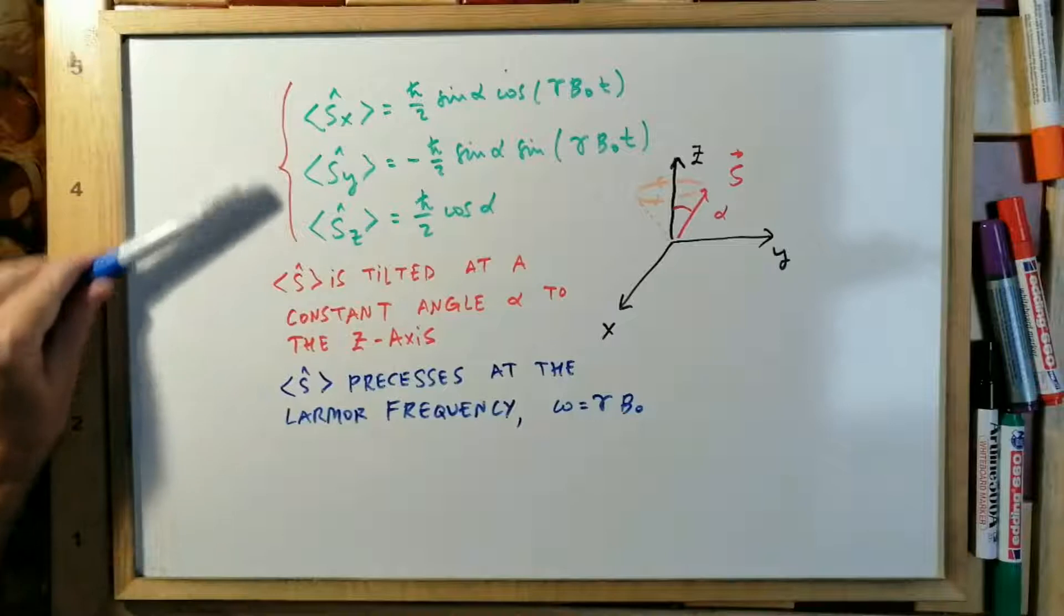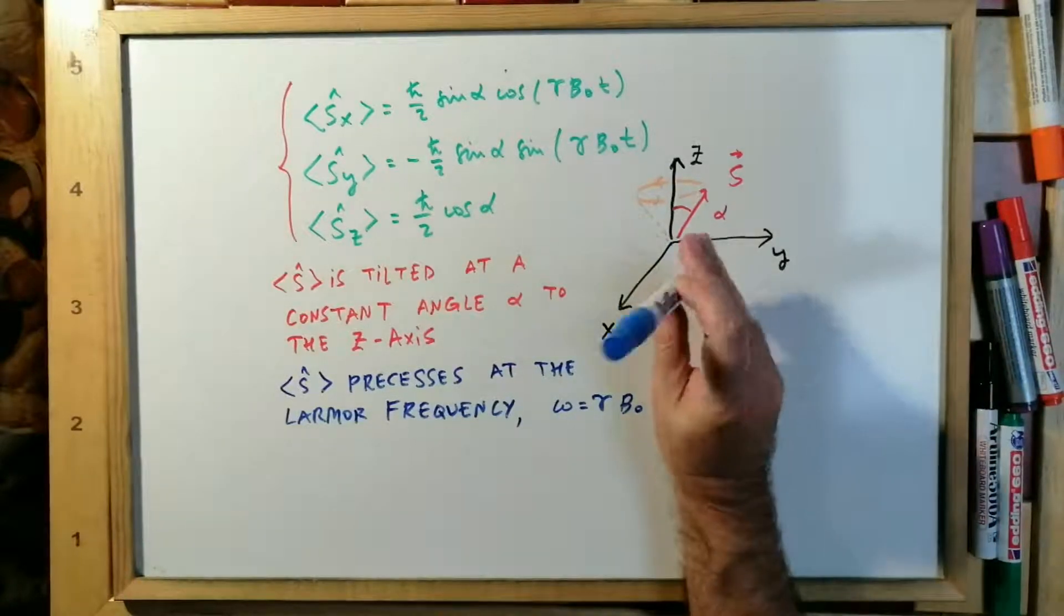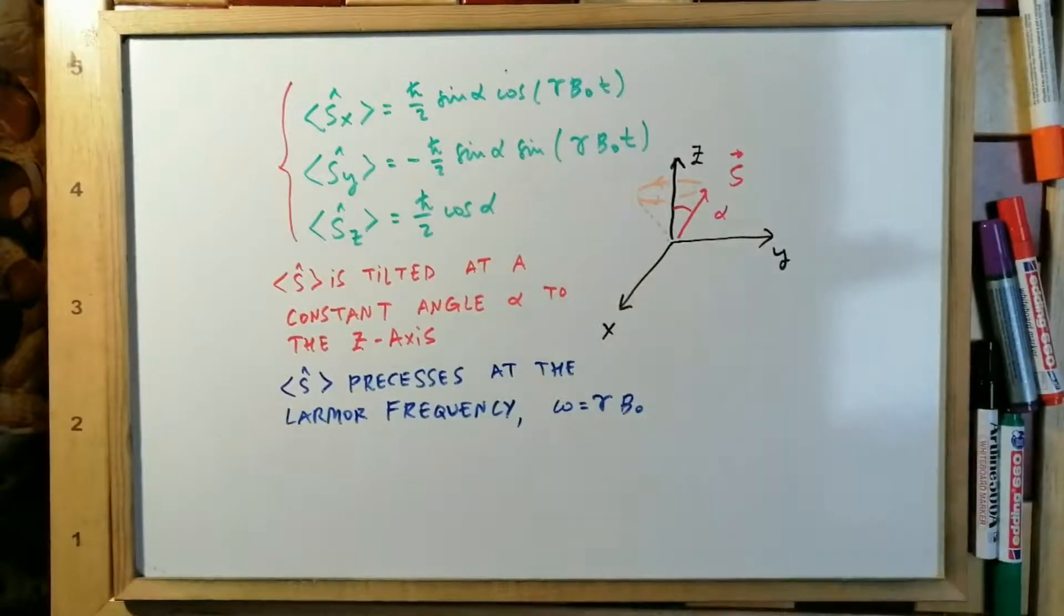These are the calculated expectation values. The expectation values tell us that the S precesses. S is tilted at a constant alpha angle to the z axis, and S precesses at the Larmor frequency.